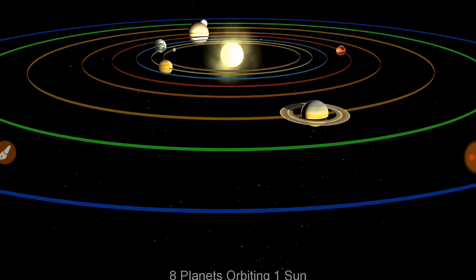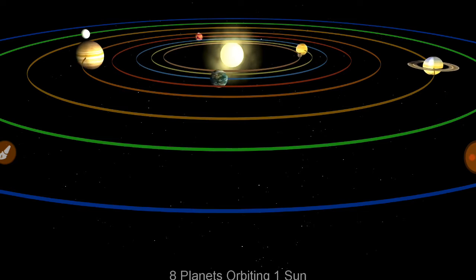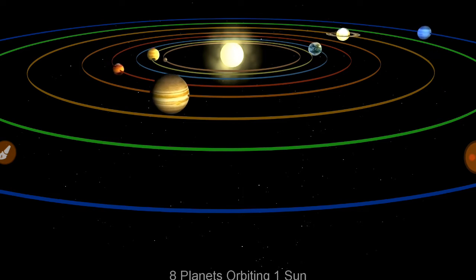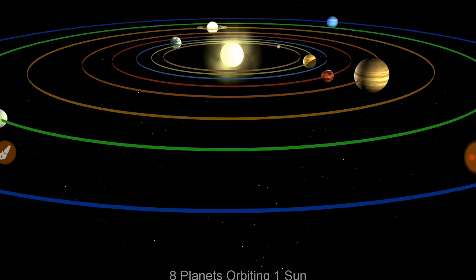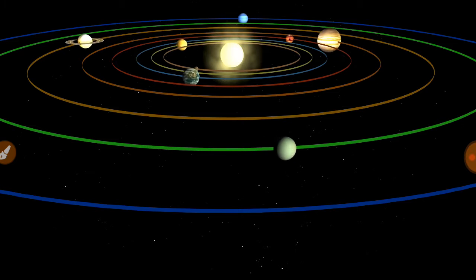The solar system or solar family comprises of the sun, eight planets, satellites, and other celestial bodies.